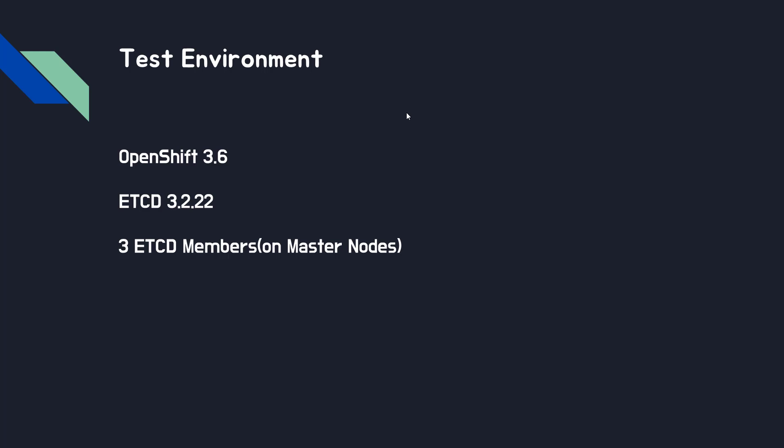You can use these steps until OpenShift version 3.9. However, for OpenShift 3.10, we need to do something different because from 3.10 we are using static pods. Most steps are very similar — the only different thing is the restart method. From this demo, I will use copying data, not snapshot.